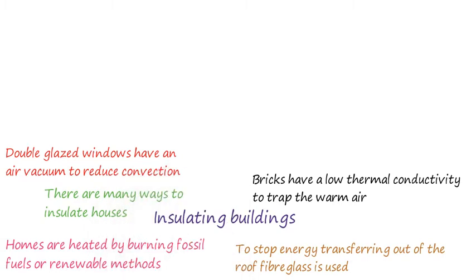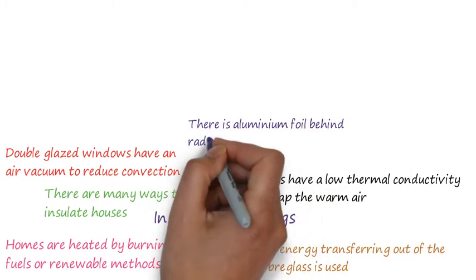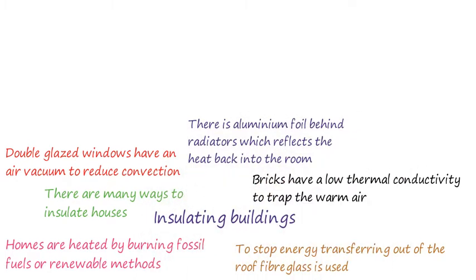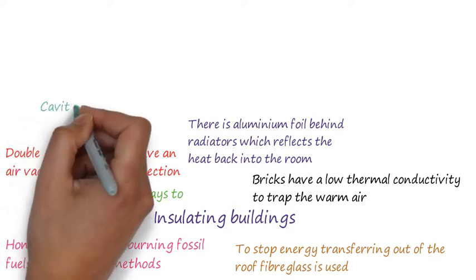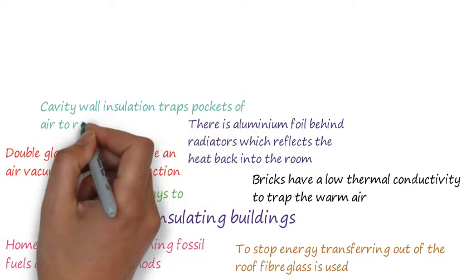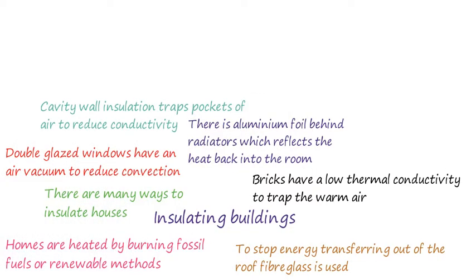Modern buildings all have double glazed windows as the air vacuum between the two glass panels reduces convection. We also have aluminium foil behind radiators to reflect the heat given off back into the room. This means not as much heat travels through the wall and to the outside.